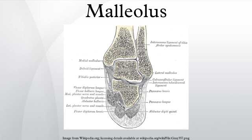Structures that pass behind the lateral malleolus — superficial to the superior peroneal retinaculum: sural nerve and short saphenous vein. Deep to the superior peroneal retinaculum: peroneus longus tendon and peroneus brevis tendon.